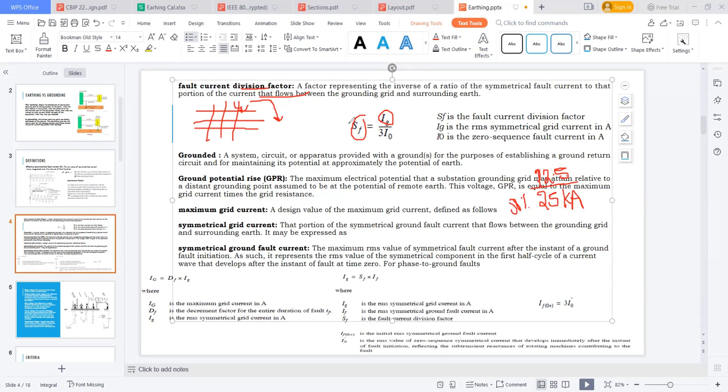This fault current division factor depends upon different things like the resistivity of the soil and other factors. I will discuss this further.